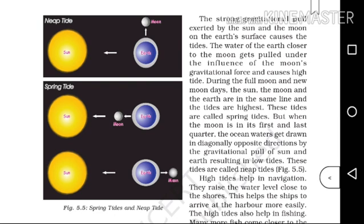This is Neap Tide — when the sun, moon, and earth are not in a line, but at an angle, the gravitational force results in low tide. Spring Tide occurs on a new moon or full moon day when they are aligned in a line, causing the highest spring tides.